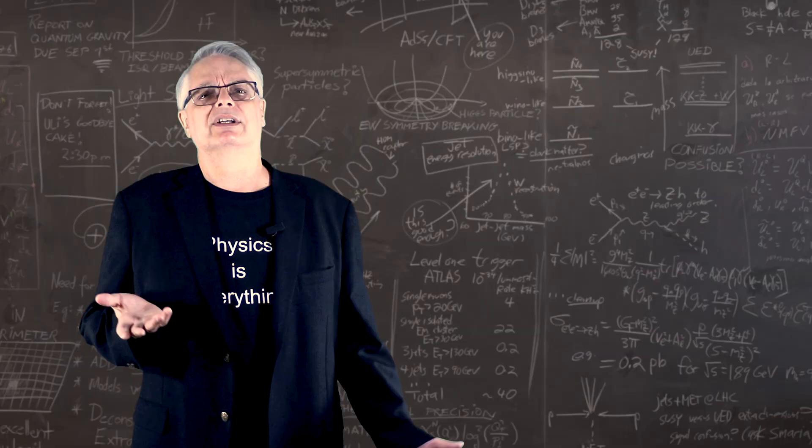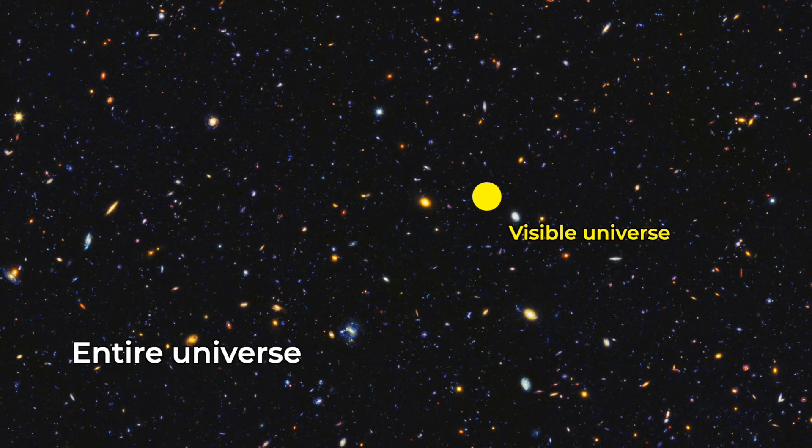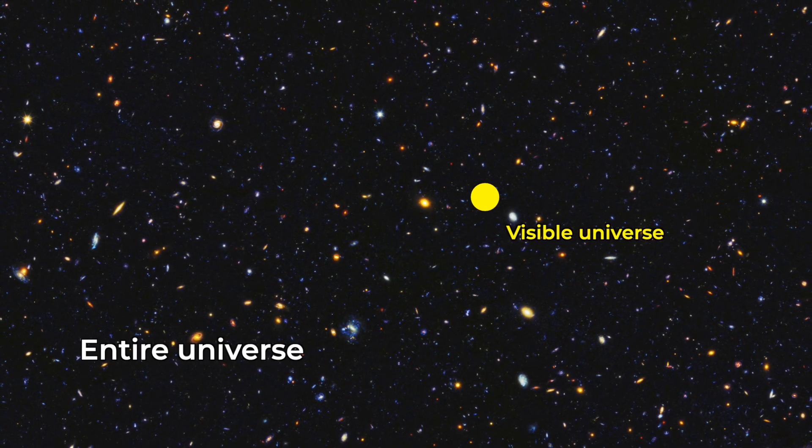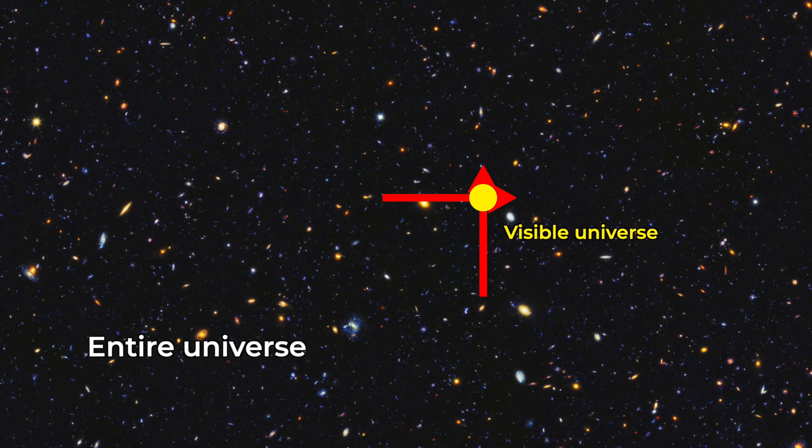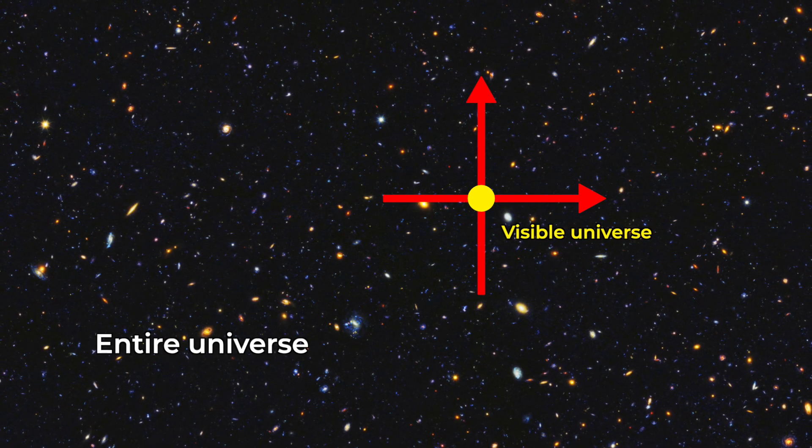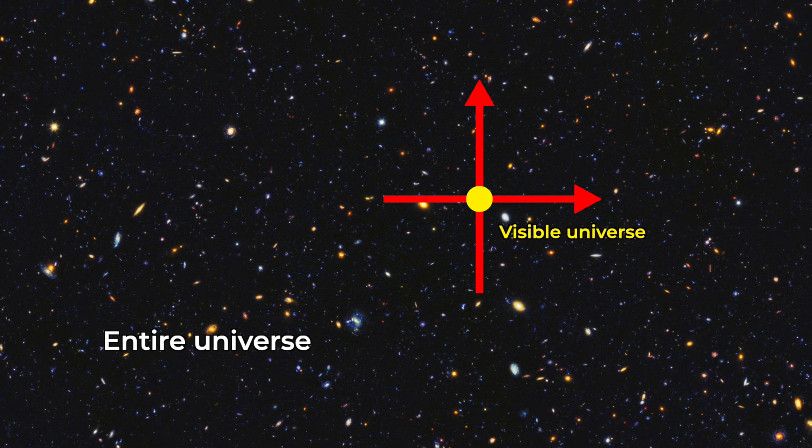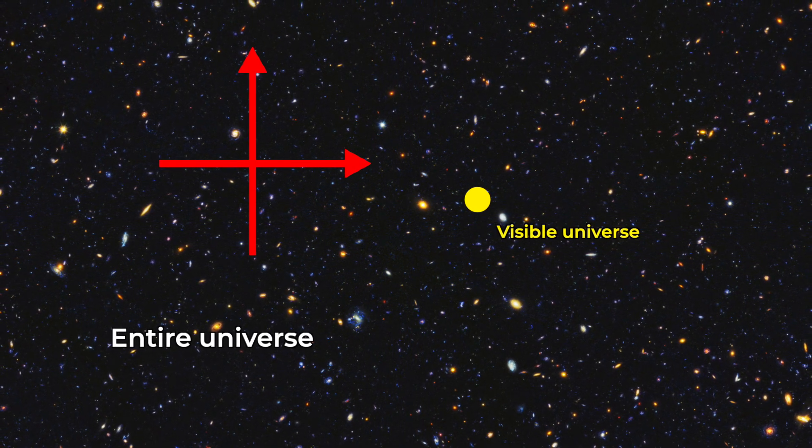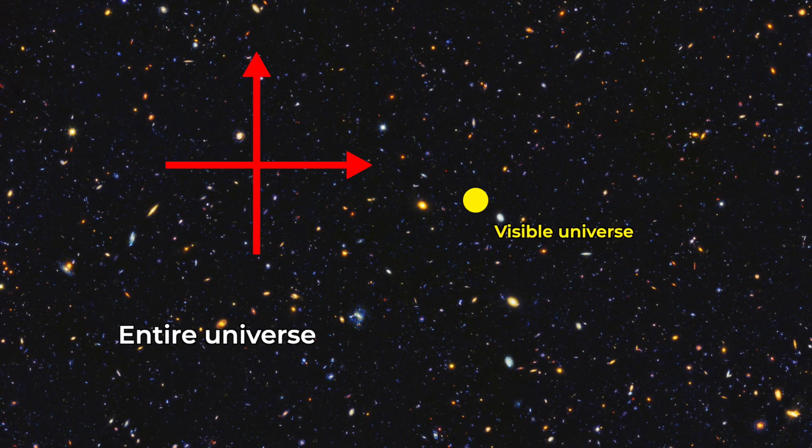So where does that leave us as far as knowing where the Big Bang began? Well, we can take this two-dimensional representation of the entire universe before the Big Bang with a speck that represents the early visible universe. We can then put axes centered on the visible universe. Because the universe is infinite, those axes run off to infinity - left, right, up and down. But we could have moved the origin of those axes somewhere different, even somewhere outside the visible universe, and those axes still run off to infinity.